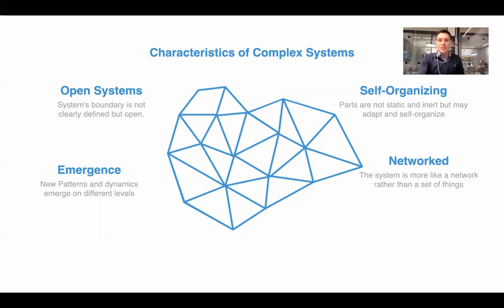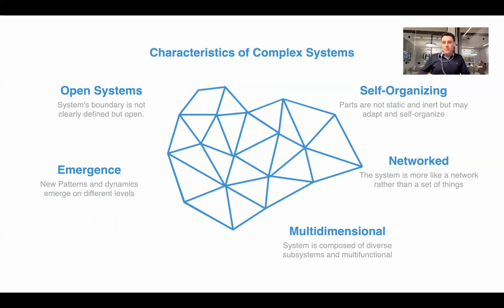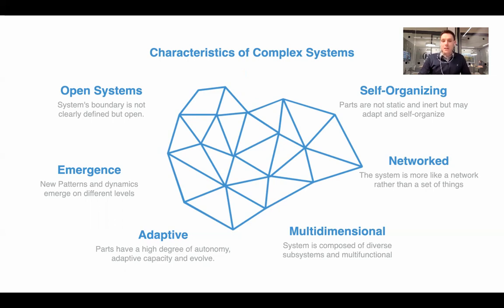Emergence is another key characteristic — new patterns and dynamics emerge on different levels, with traffic jams being a good example. Complex systems are also multidimensional, composed of diverse subsystems and multifunctional, like a city, which has many subsystems such as energy, lighting, and accommodation. They are adaptive: parts have a high degree of autonomy and adaptive capacity, evolving over time. In a city or an Internet of Things platform, there are many different autonomous and adaptive components connecting into the platform, and we won't fully control them because they're autonomous in some sense and adapting and evolving — we need to actually work with them.